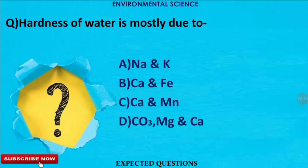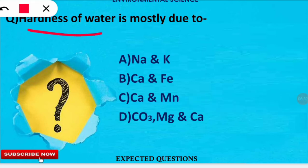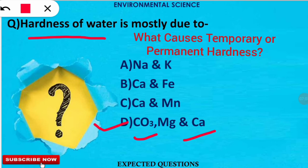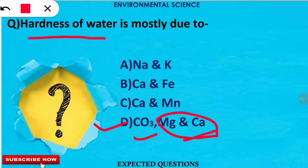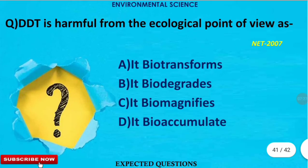The next question: hardness of water is mostly due to which elements? Hardness of water refers to its mineral content — the higher the content, the harder the water. The correct option is D: hardness is mostly due to magnesium and calcium, along with carbonate ions. Additionally, permanent hardness is caused by chlorides of magnesium and calcium, while temporary hardness is caused by their carbonates.